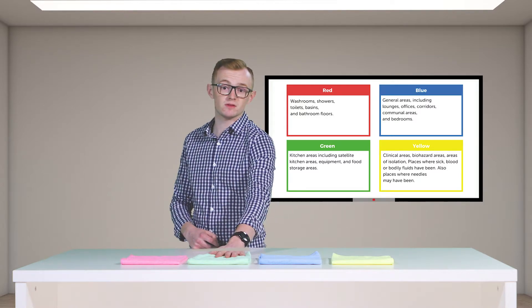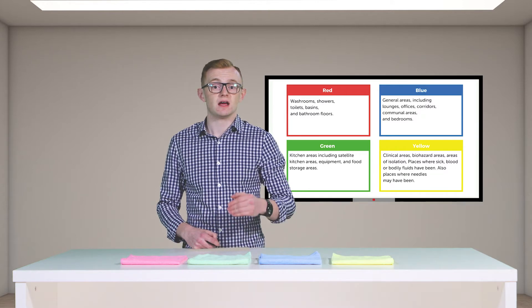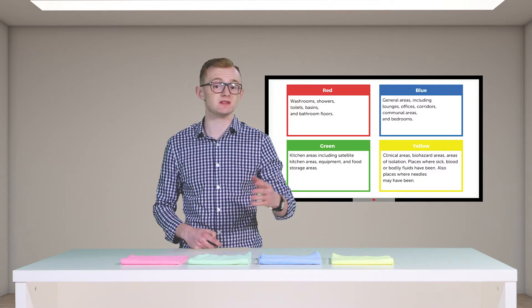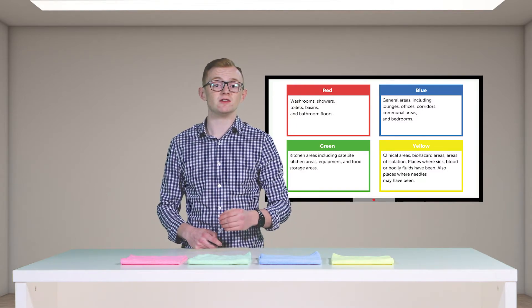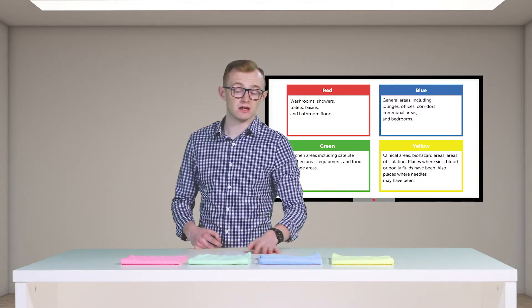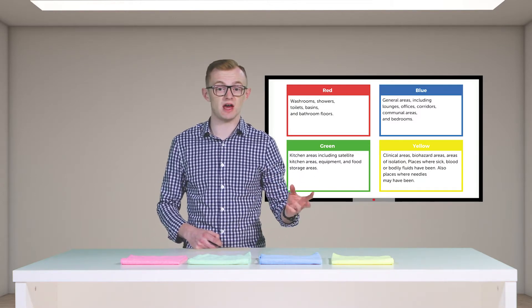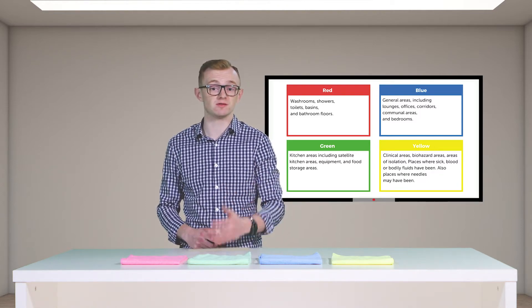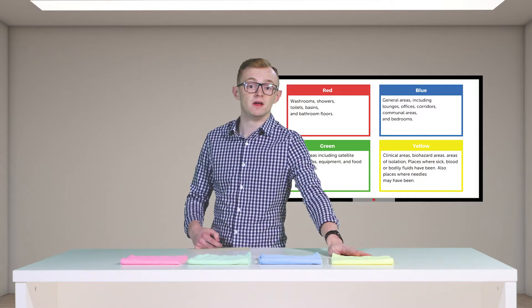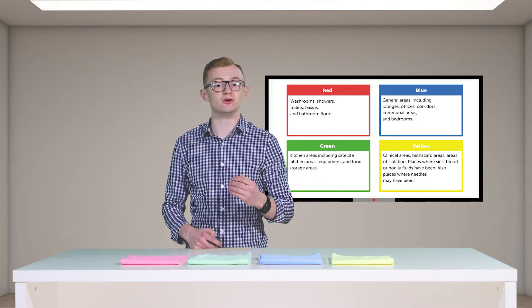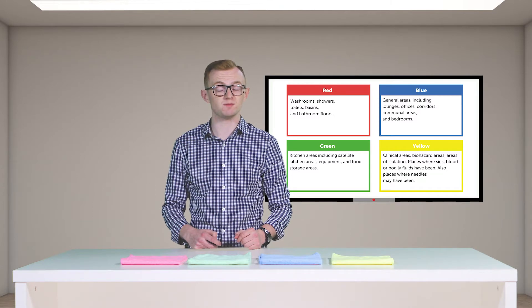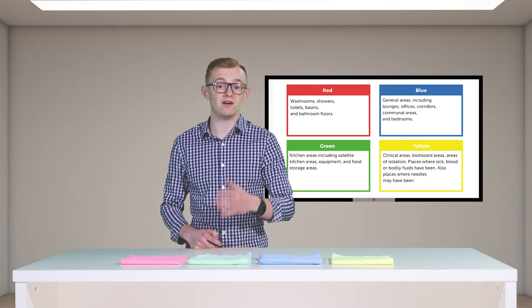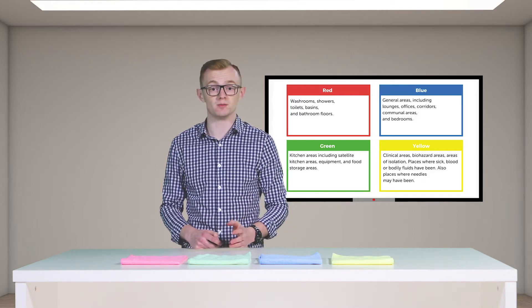Next is green, which is for catering areas — kitchens, bars, etc. This is used for all work surfaces, high touch points, and appliances within the room. Then there is blue, which is for general cleaning such as corridors, reception areas, offices, or classrooms, covering high touch points and floor areas. Lastly is yellow, which isn't as common but falls under the clinical category, generally including biohazard areas — used for cleaning up sick, areas where needles have been, or where bodily fluids or blood might be.